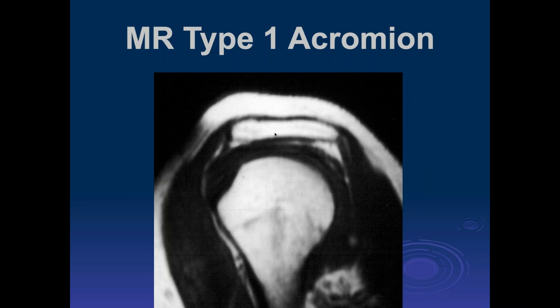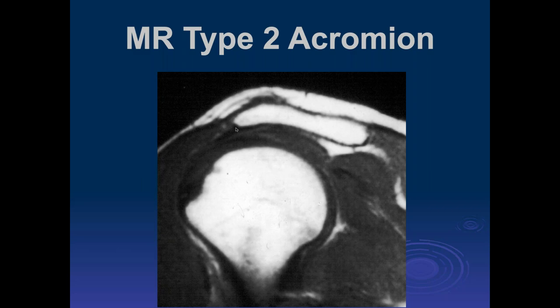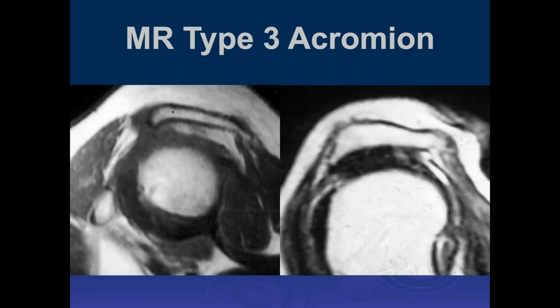Type 1 is a relatively flat acromion on oblique sagittal imaging—a very gentle slope, essentially flat, with no anterior osteophyte. Type 2 has a gentle curve but stays roughly equidistant between the humeral head and the acromion. These are T1-weighted images, though we now prefer non-fat-suppressed T2-weighted oblique sagittal images. Type 3 acromion shows an abrupt narrowing of the distance between the anterior margin of the acromion and the humeral head.